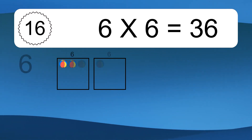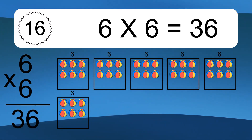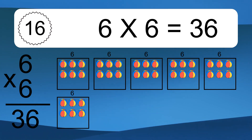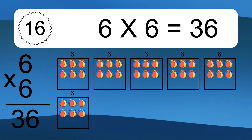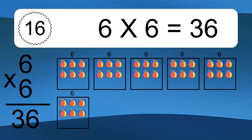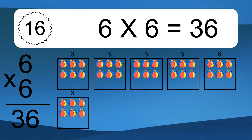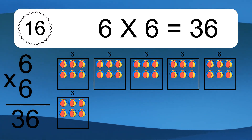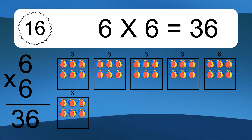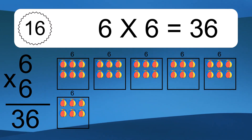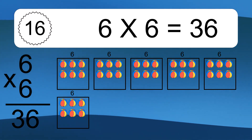6 times 6 equals what? 6 times 6 equals 36. We have 6 boxes, and each box has 6 colorful balls inside. If you count all the balls in all the boxes together, you will have 6 times 6 balls. This equals 36 balls.